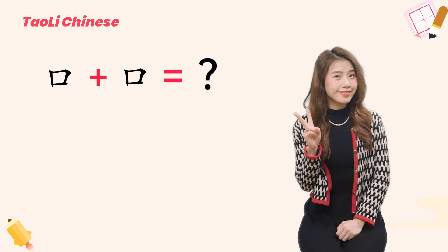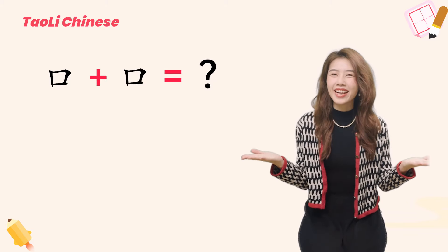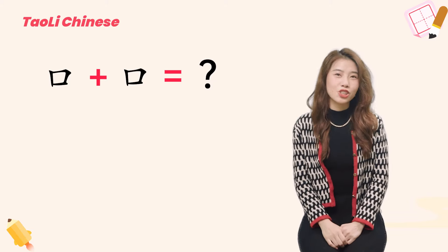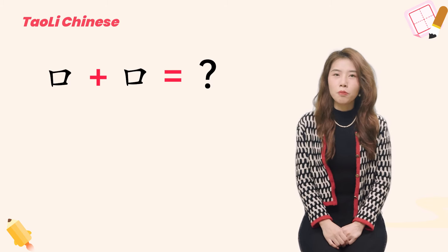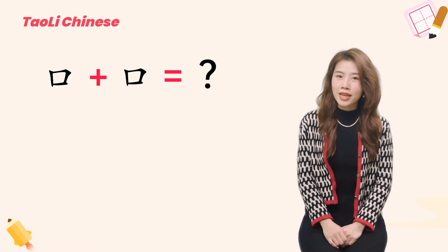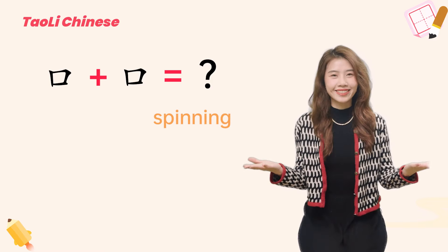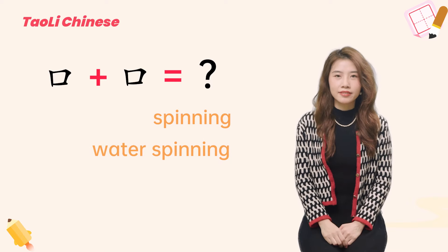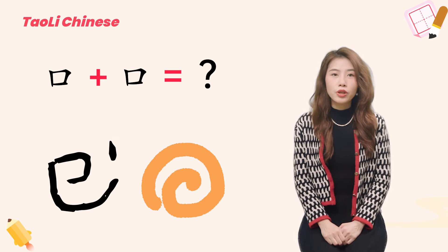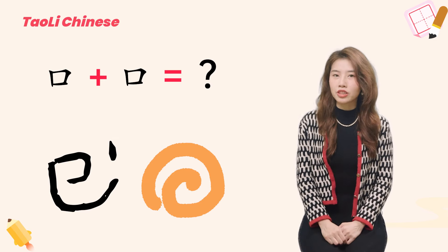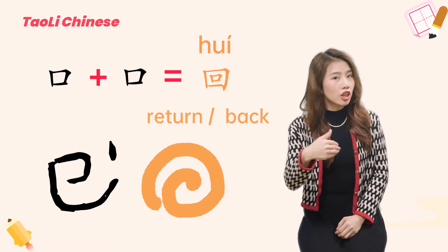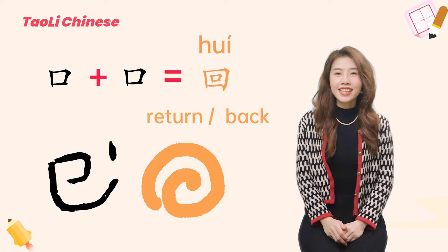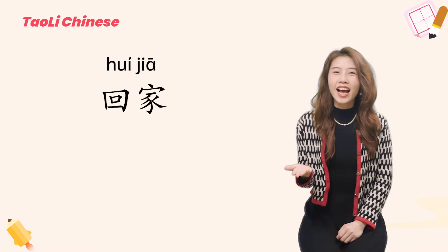Since one 口 means mouth, what about two? When it comes to two, it is a bit tricky because it has nothing to do with people. Indeed, it means spinning — especially water spinning. Look at the pictures and you will understand how the character has evolved. We usually use 回 to mean 'return' or 'back.' For instance, 回家 means go home.